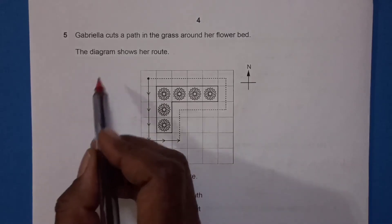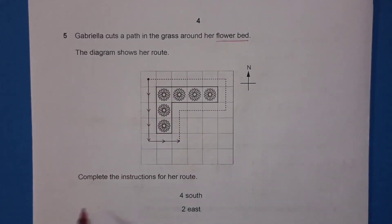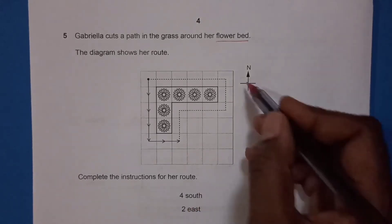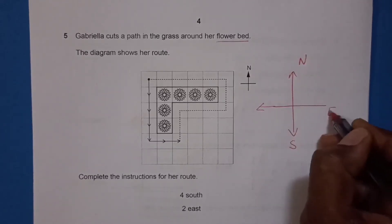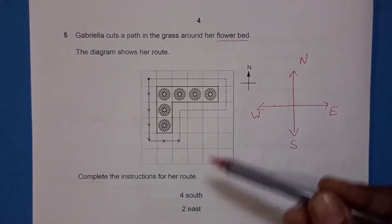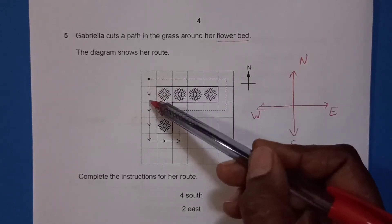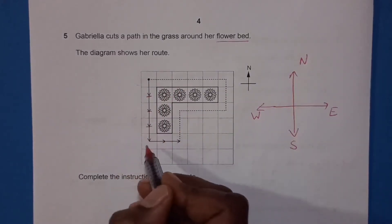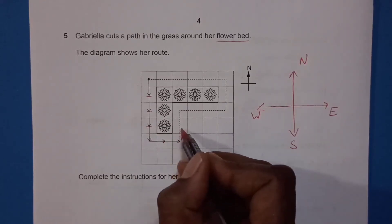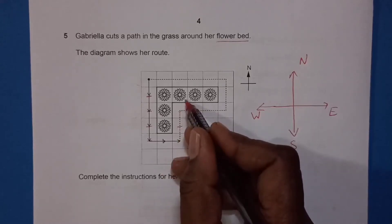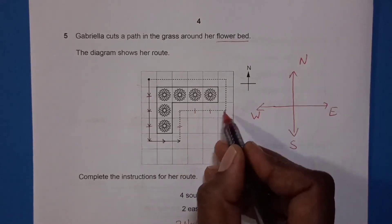Question 5: Gabriela cuts a path in grass around her flower bed. Complete the instructions for her route. North is up, south is down, east is right, west is left. She starts at a point, goes 4 squares south, then 2 squares east. Then she goes 2 squares north, followed by 3 squares east.